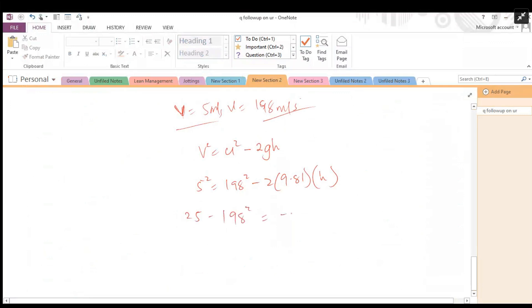That's -19.6h. So when you do the math, h becomes 19,987.2 meters. This is what we're going to get at the end of the day when you punch your calculator.